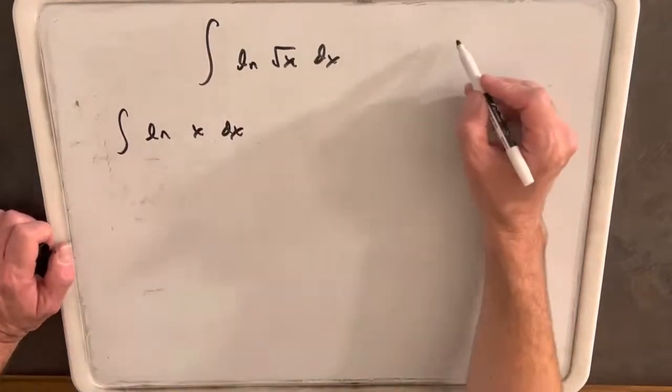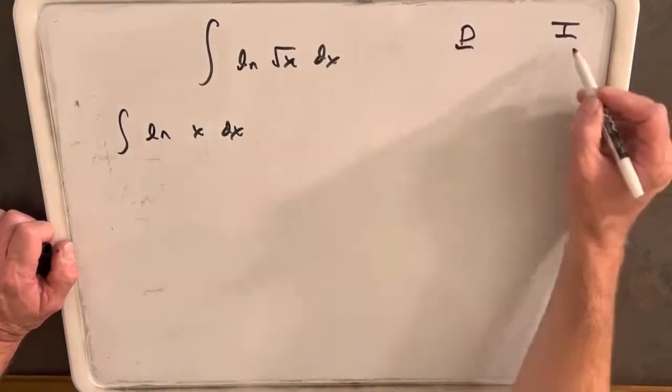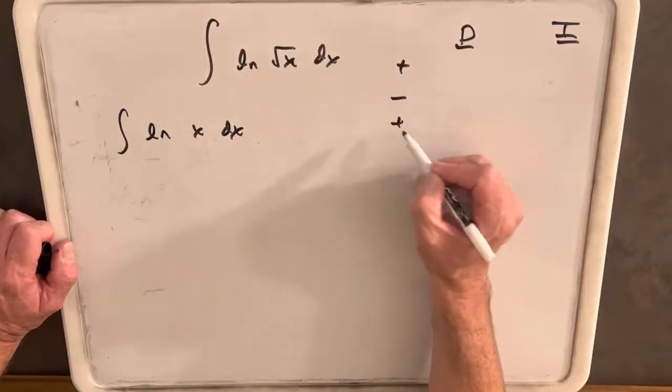So, doing this with the DI method, we're going to have two columns. We're going to have a column, D to differentiate, I to integrate, alternating signs.